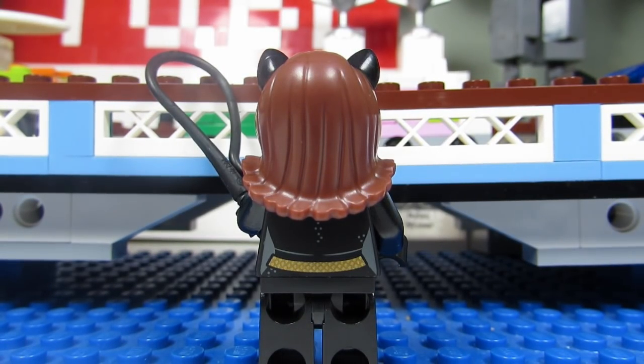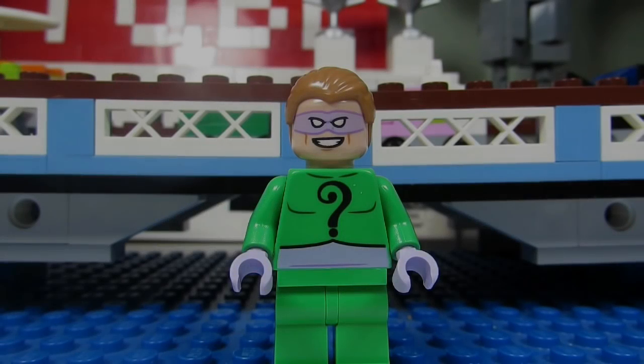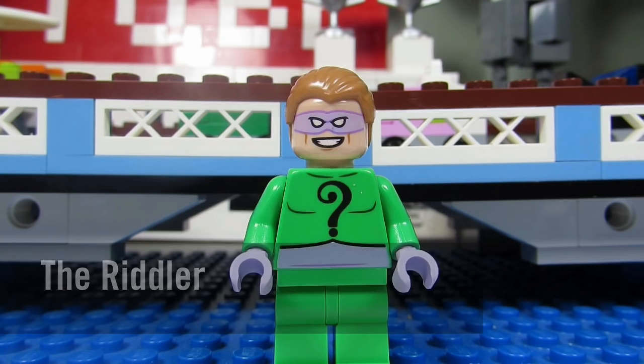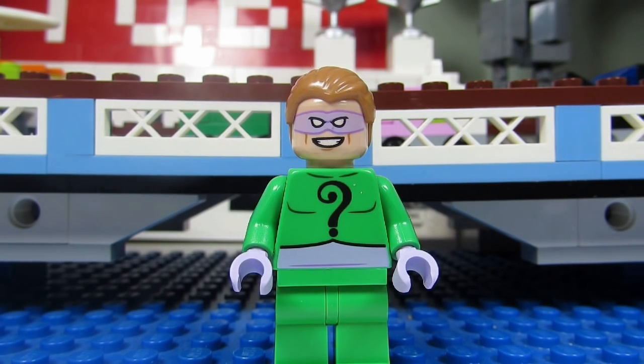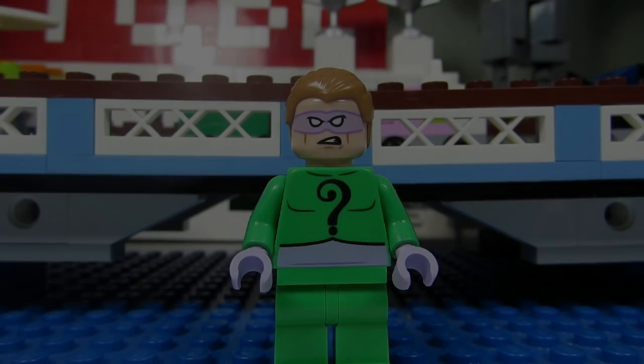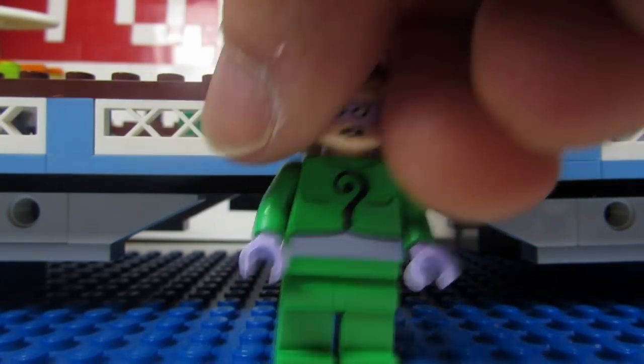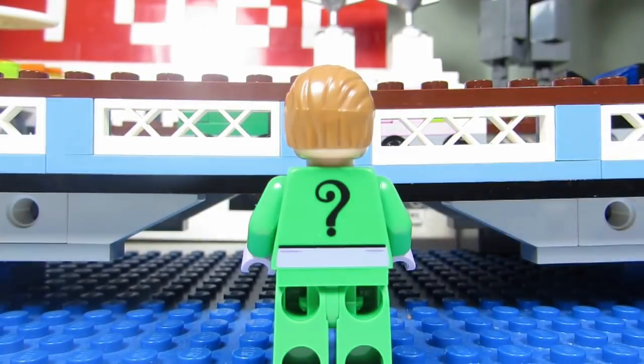Next up is the Riddler with the question mark on his torso. He has that violet or light purple mask and belt and hands. Kind of a boring minifigure though. Here is the Riddler's alternate face where he looks a little irked, and he does have some back torso printing with another question mark.